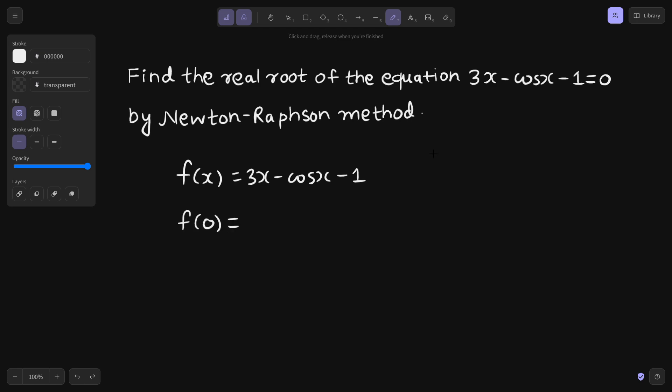By hit and try let us start from 0. So 3 into 0 is 0, cos 0 is 1 and minus 1, so you are getting minus 2 which is a negative value. Let us check at 1. You will be using the values in radians. So 3 minus cos of 1 minus 1. I am writing till 4 decimal places. f of 1 will be 3 minus cos 1 minus 1 which equals 1.4597. As you can see, this is a positive value.